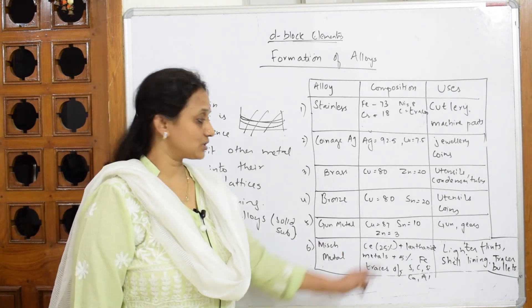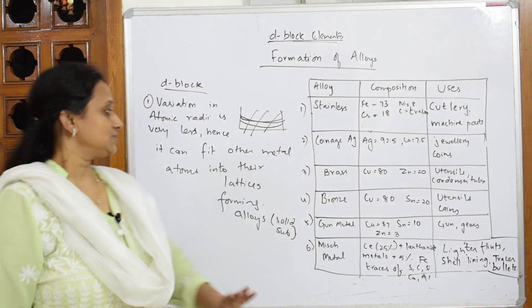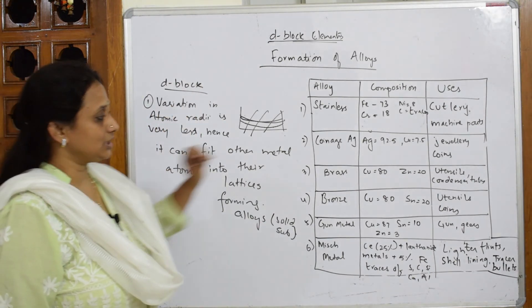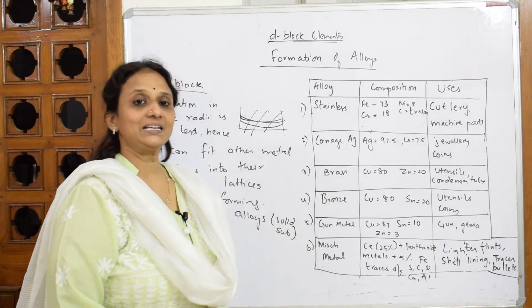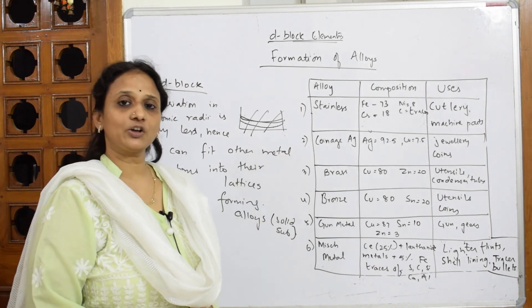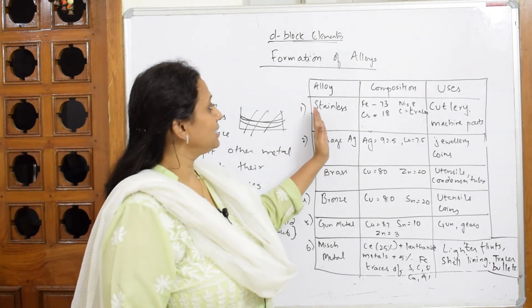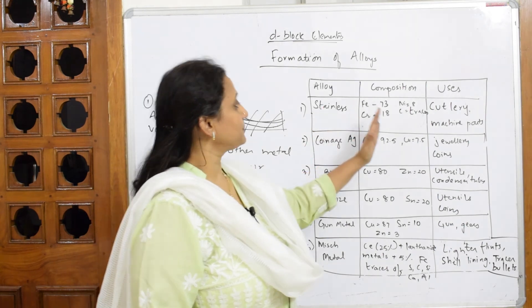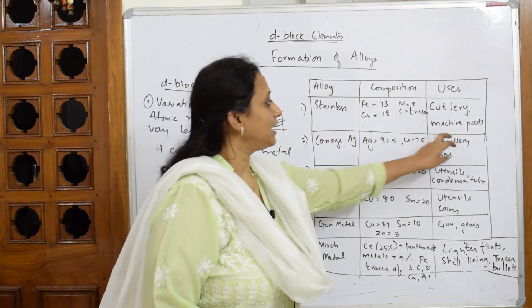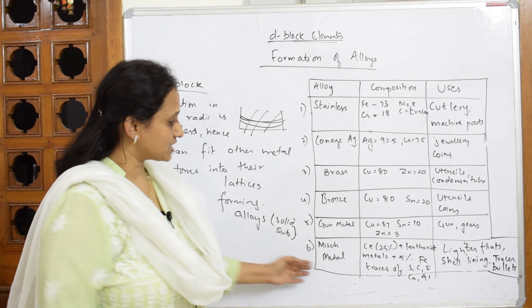They may ask what is gun metal, what is the composition of gun metal. The concept is clear. There's nothing to explain further. You try to note the alloy composition. I've given the type of alloy, the composition, and the use.